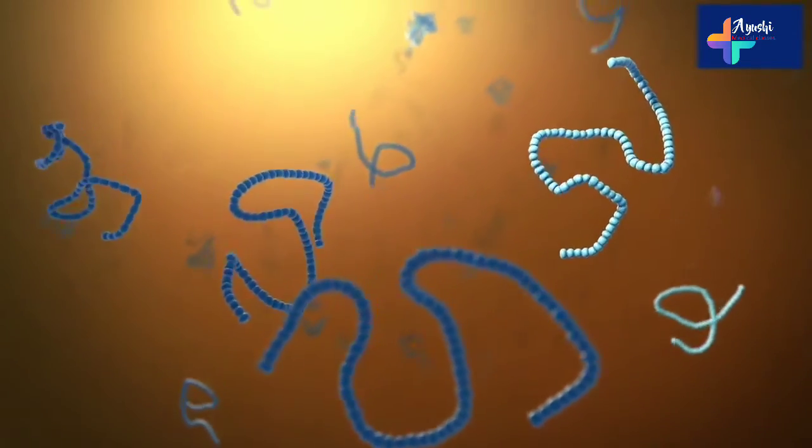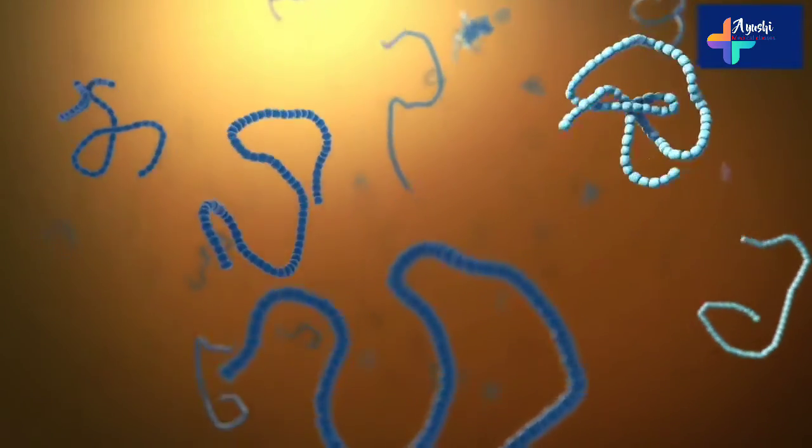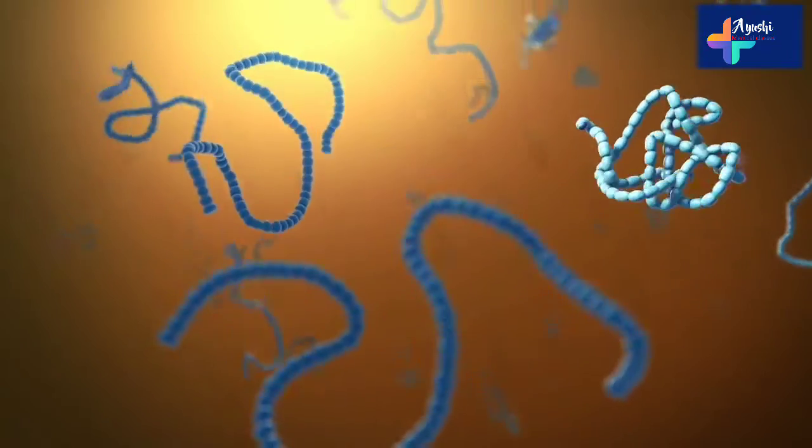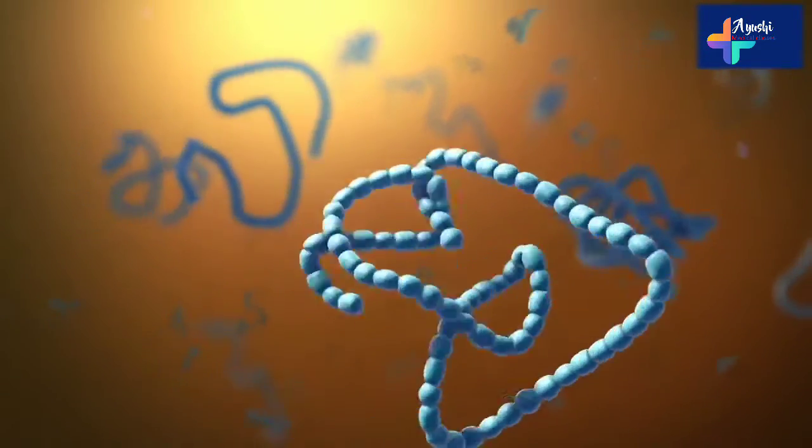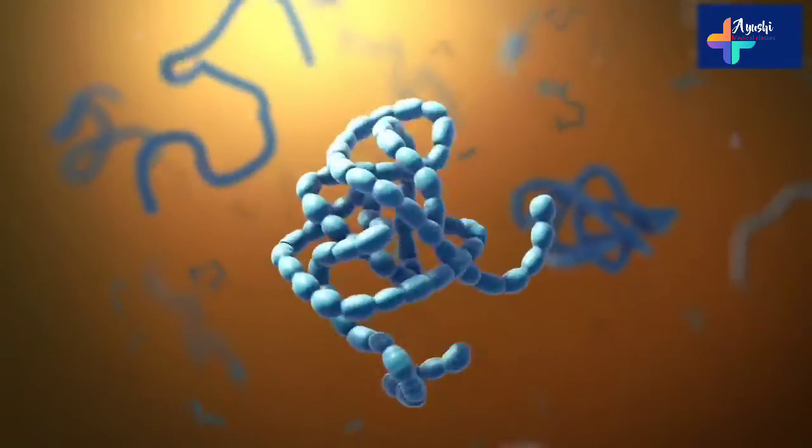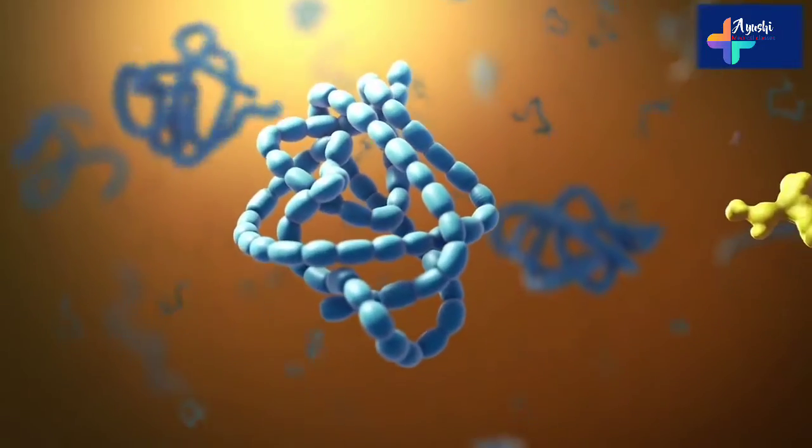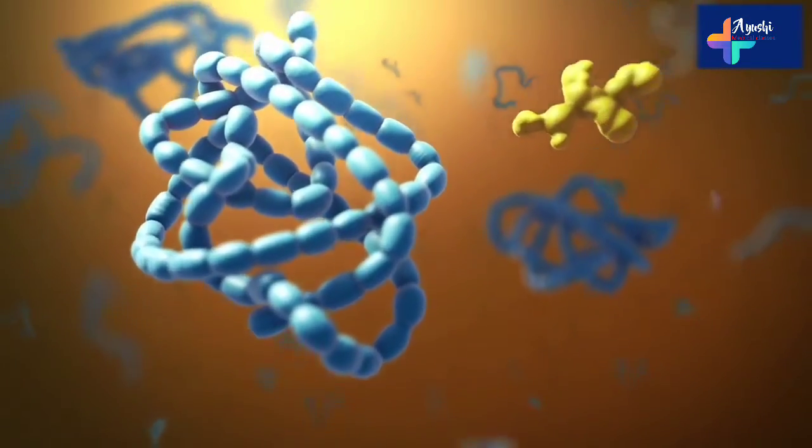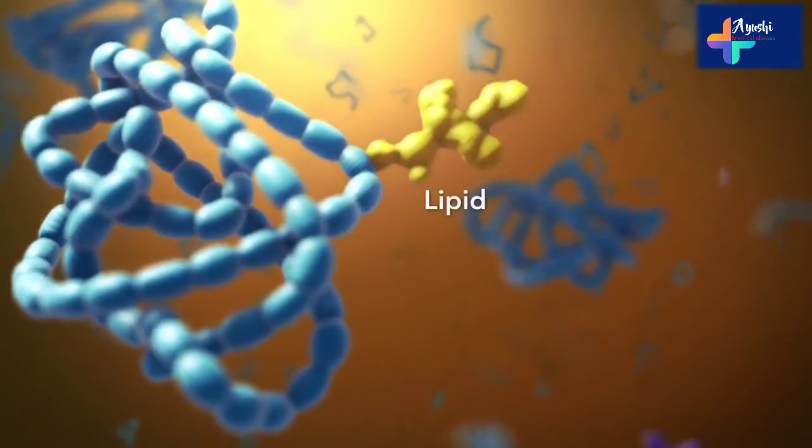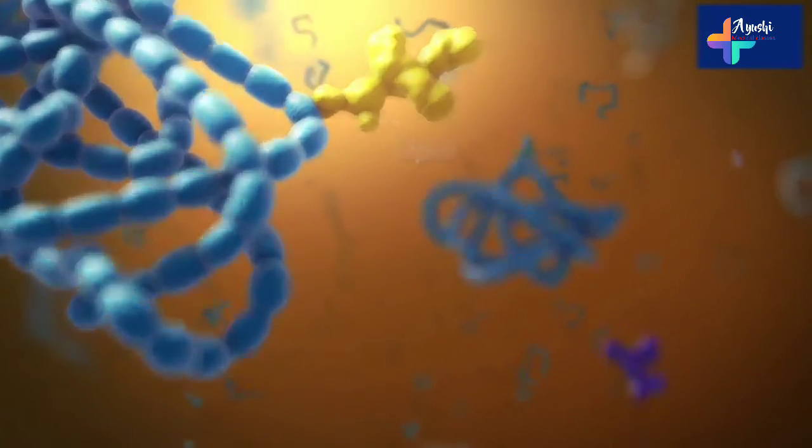As proteins move through the Golgi body, they're customized into forms that the cell can use. The Golgi body does this by folding the proteins into usable shapes, or adding other materials onto them, such as lipids or carbohydrates.